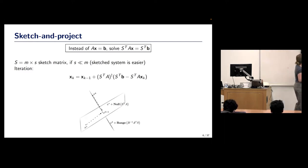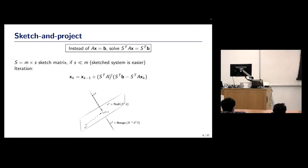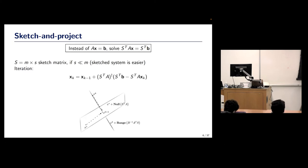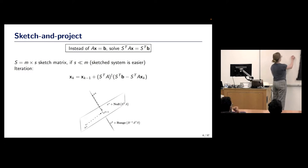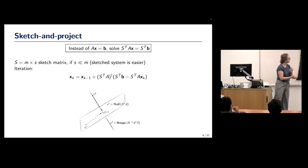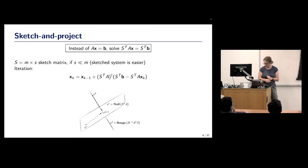We want s to be much smaller than m, then we solve the sketched system as well as possible. If x-star is the correct solution, the next iterate will completely solve the sketched system. Typically the sketch size is also less than the dimension n, so you weren't able to solve it exactly after one iteration.